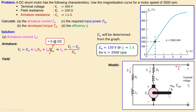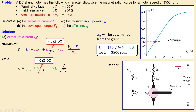Let's also look at the field part of the circuit. We set up Kirchhoff's Voltage Law: the terminal voltage is applied across the two elements in the field branch. Since this is DC, the reactance of the field inductor is zero and it drops out, leaving only the field resistance. So the field current is the terminal voltage divided by the field resistance: 400 over 200 equals 2 amps. So we have 2 amps, not 1 amp.